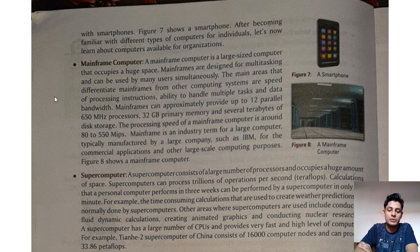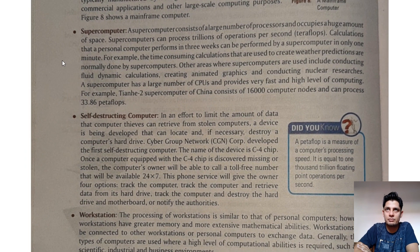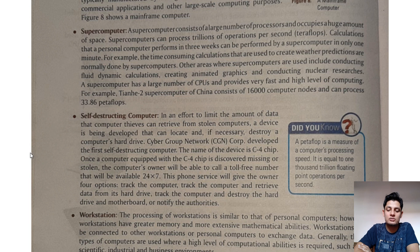Next we see supercomputer. Whenever we talk about supercomputers we use the word 'most powerful.' A supercomputer consists of a large number of processors and occupies a huge amount of space. Supercomputers can provide trillions of operations per second. Calculations that a personal computer performs in three weeks can be performed by a supercomputer in only one minute — for example, time-consuming calculations used to create weather predictions.